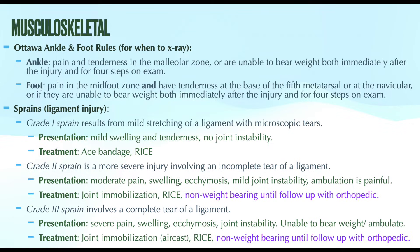A grade one sprain results from mild stretching of a ligament with microscopic tears, presenting with mild swelling and tenderness, no joint instability on exam, and the patient is able to bear weight and ambulate with minimal pain. A grade two sprain involves an incomplete tear of a ligament with moderate pain, swelling, tenderness, ecchymosis, mild to moderate joint instability, restricted range of motion, and more painful weight-bearing. A grade three sprain is a complete tear with severe pain, swelling, tenderness, ecchymosis, significant joint instability, loss of function and motion, and inability to bear weight or ambulate.